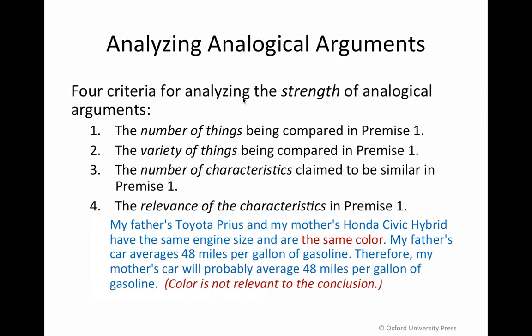Let's look at the example in blue. My father's Toyota Prius and my mother's Honda Civic Hybrid have the same engine size and are the same color. My father's car averages 48 miles per gallon of gasoline; therefore, my mother's car will probably average 48 miles per gallon as well. There are two things being compared — Toyota Prius and Honda Civic Hybrid. The variety of things is narrow, mainly just types of car. The number of characteristics claimed to be similar are two.